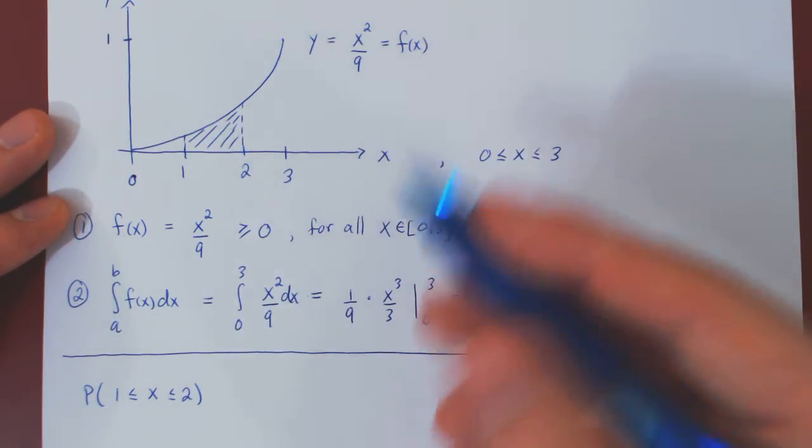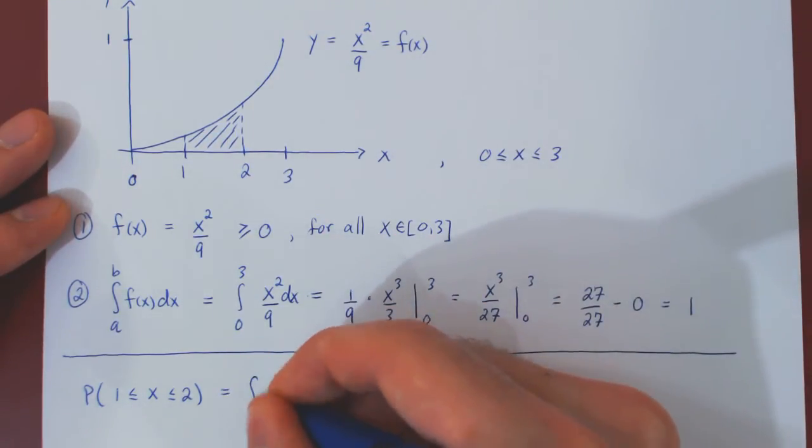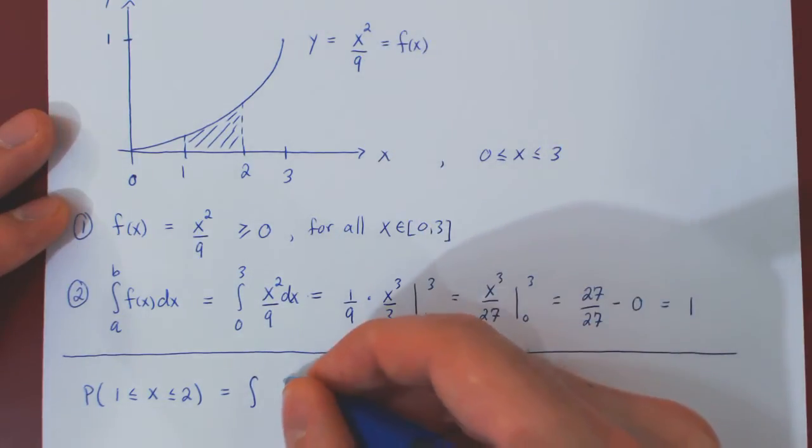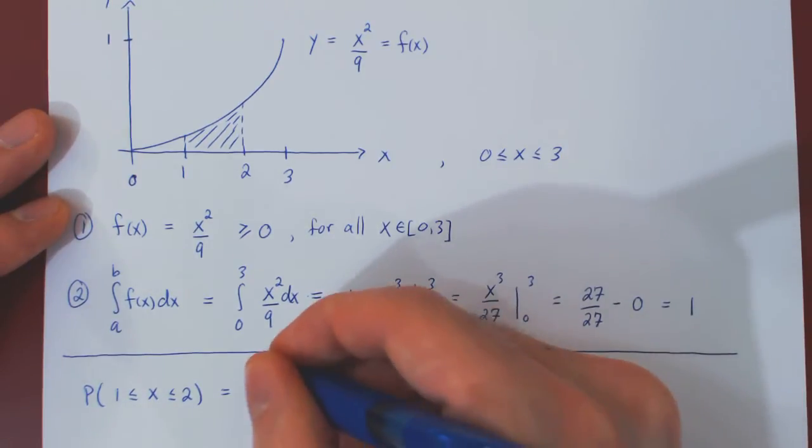And the area below the curve is given by definite integral. The curve here is x squared over 9. And the interval is from 1 to 2.